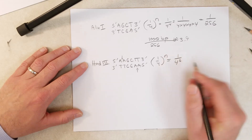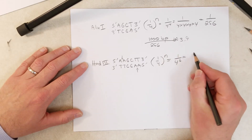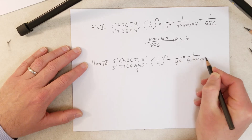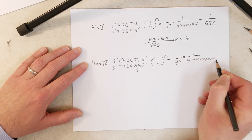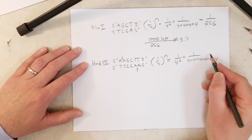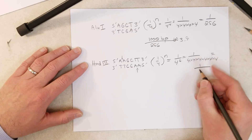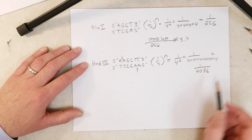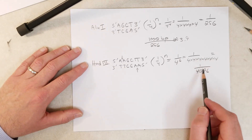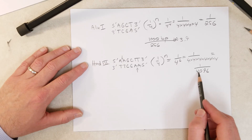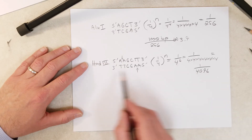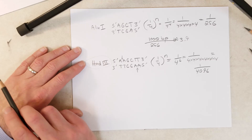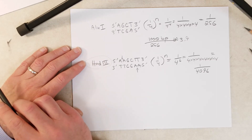One over four raised to the sixth power equals one over four times four times four times four times four times four — that's six fours — which comes out to one over 4,096. So given a DNA molecule of about 4,000 base pairs in length, we would expect HIN-D3 to cut that molecule at least one time.